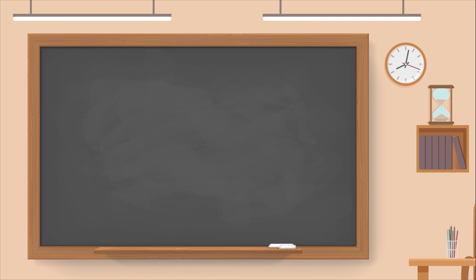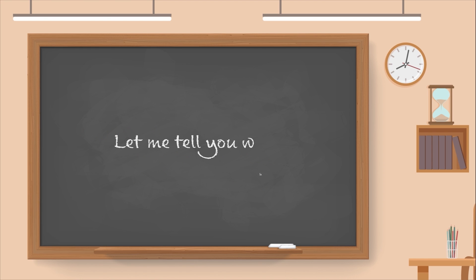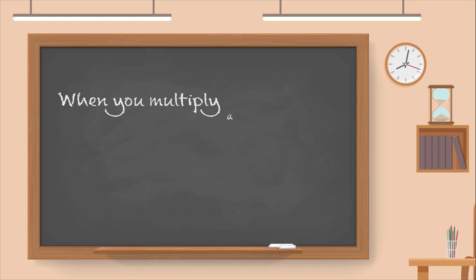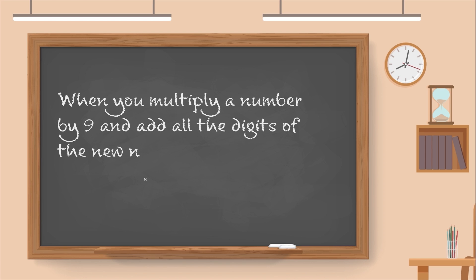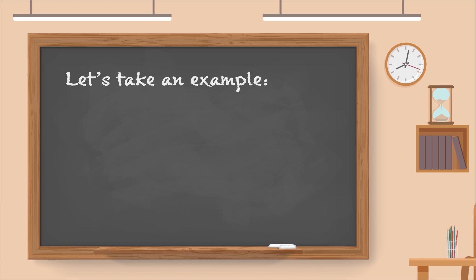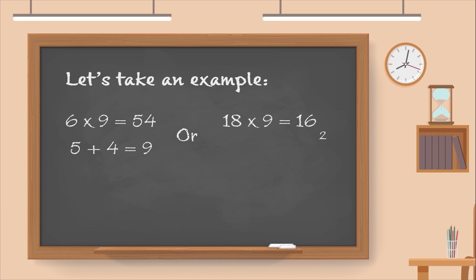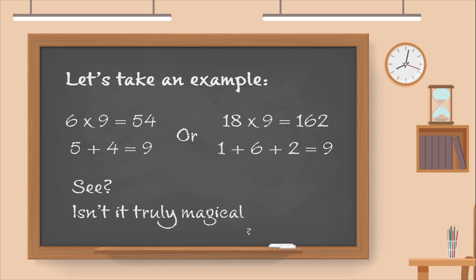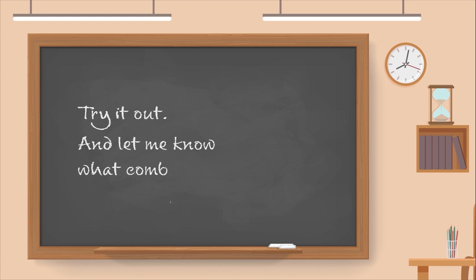Trivia time! Fun fact about the number 9: the number 9 is considered to be a magic number. When you multiply a number by 9 and add all the digits of the new number together, the sum will always add up to 9. Let's take an example: 6 times 9 is equal to 54, and 5 plus 4 is equal to 9. Or 18 times 9 is equal to 162, and 1 plus 6 plus 2 is equal to 9. Isn't that truly magical? Try it out and let me know what combination you tried.